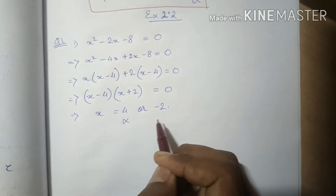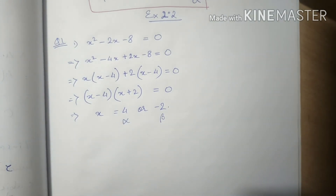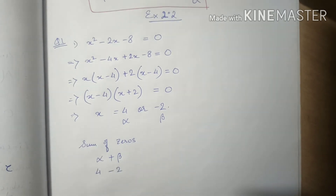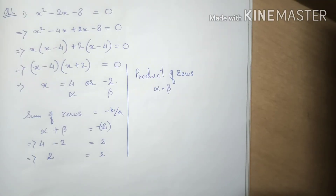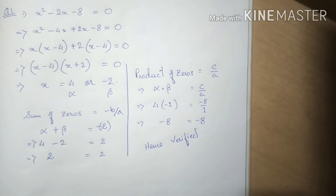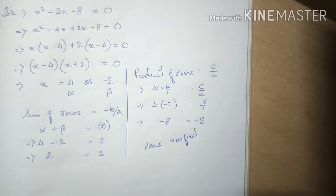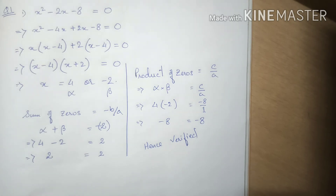x can be minus 2, making the first factor zero, or x can be plus 4, making the second factor zero — since zero times anything is zero. So we get our two values of x: alpha and beta. We then verify: sum of zeros equals minus b by a, and product of zeros equals c by a.